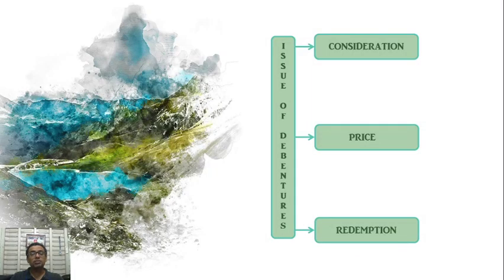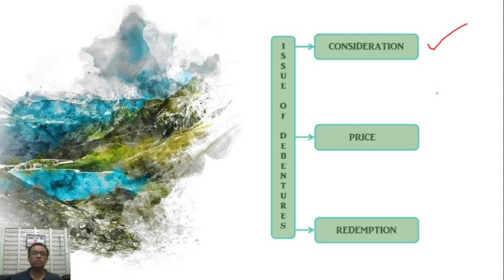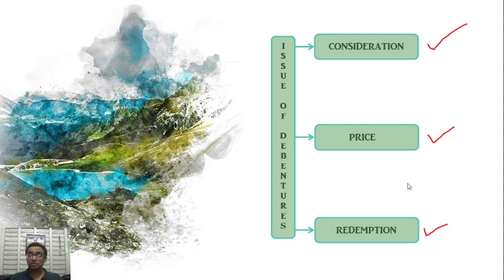If you want to classify the debenture issue, there are 3 points of view. First, consideration point of view: consideration for cash, and consideration other than cash. Second, price point of view: issued at par, issued at discount, and issued at premium. Third, redemption point of view: redeemable shares.